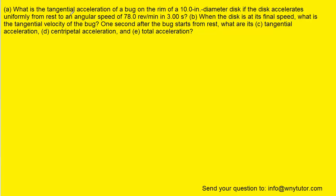In order to calculate the tangential acceleration, we can start with the equation for tangential acceleration. In that equation, we know that the tangential acceleration is equal to the radius times the angular acceleration. We don't know the angular acceleration directly, but we can use the equations of rotational kinematics to find the angular acceleration. According to those equations, the final angular velocity equals the initial angular velocity plus the angular acceleration times the time interval.